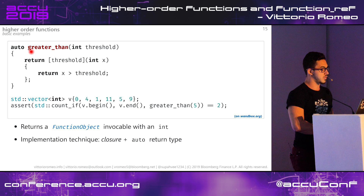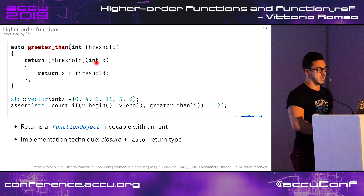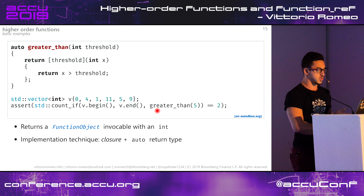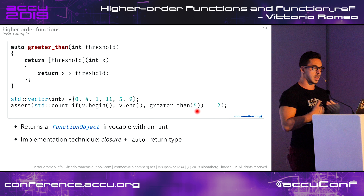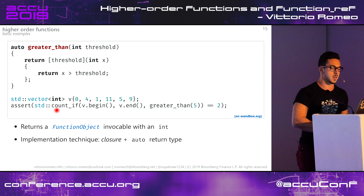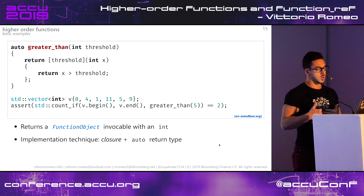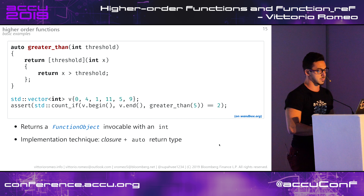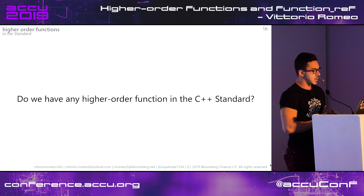This is another example where we actually return a function instead of accepting one. Imagine we have this greater_than function that takes a threshold, and the return type is going to be deduced from the body of the function. We simply return a lambda that captures the threshold by value, takes a generic integer x, and returns whether x is greater than the threshold. You can use this in a context such as STL algorithms to produce a predicate in a terse manner - say you have a vector of numbers and want to count how many are greater than 5. You can produce your predicate on the spot by calling greater_than(5), which returns a lambda, and then use it in count_if to figure out how many elements match the predicate.